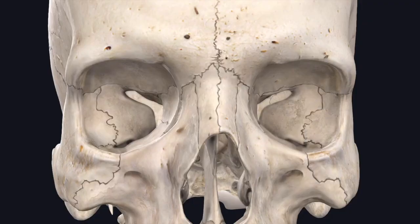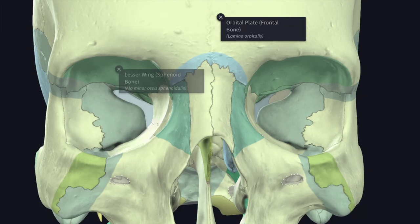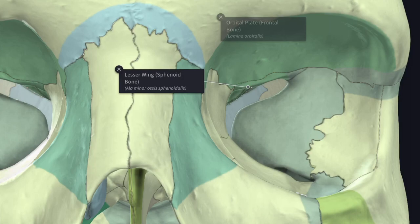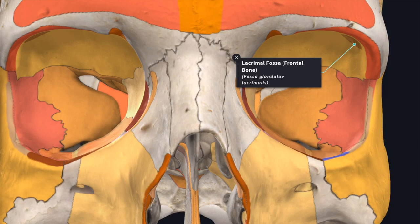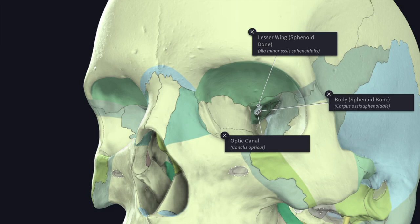The orbit presents a roof, a medial wall, a floor, and a lateral wall. The roof is formed by two bones: the orbital plate of the frontal bone in front and the lesser wing of the sphenoid bone behind. The anterolateral part of the roof presents a fossa for the lodgement of the orbital part of the lacrimal gland. A trochlear notch or spine at the anteromedial angle of the roof gives attachment to the pulley for the superior oblique muscle of the eyeball. The optic canal is situated at the extreme posterior part of the roof between the two roots of the lesser wing and the body of the sphenoid bone.